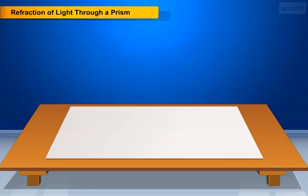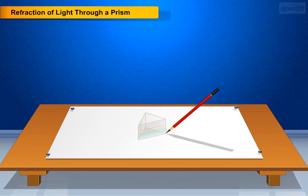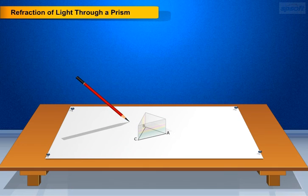Fix a sheet of white paper on a drawing board using drawing pins. Place the prism on the sheet and draw the outline A, B, C of the prism on the sheet.